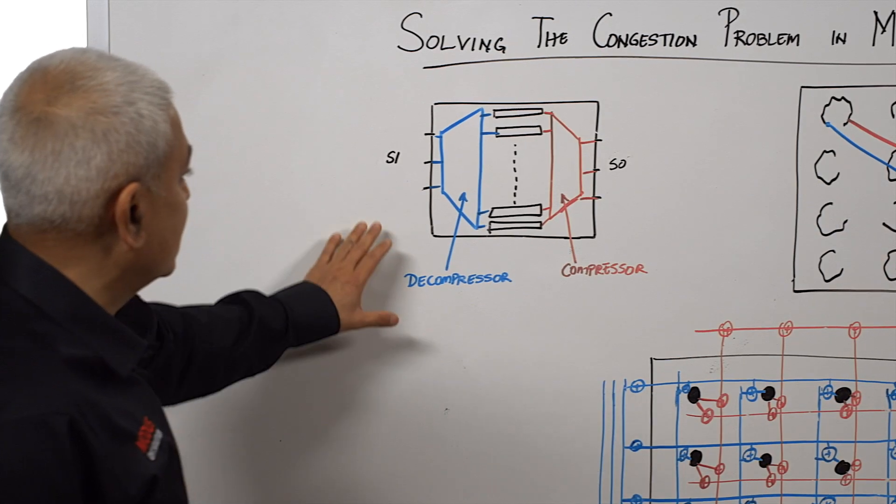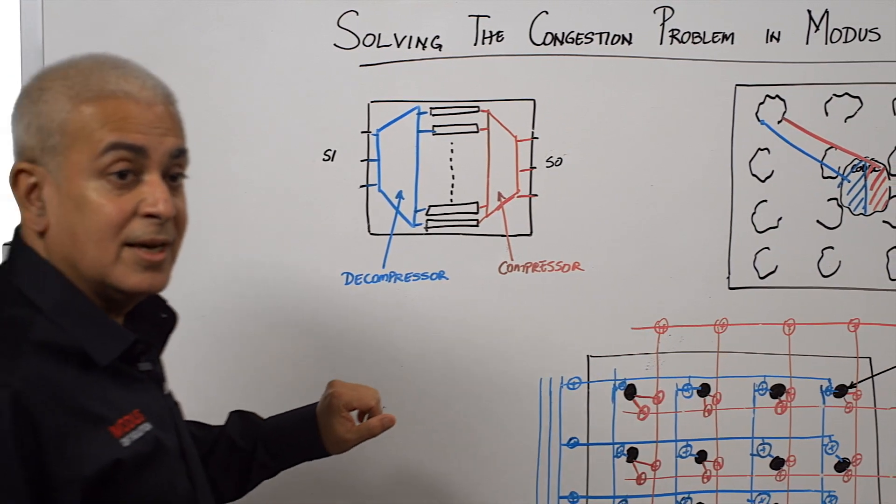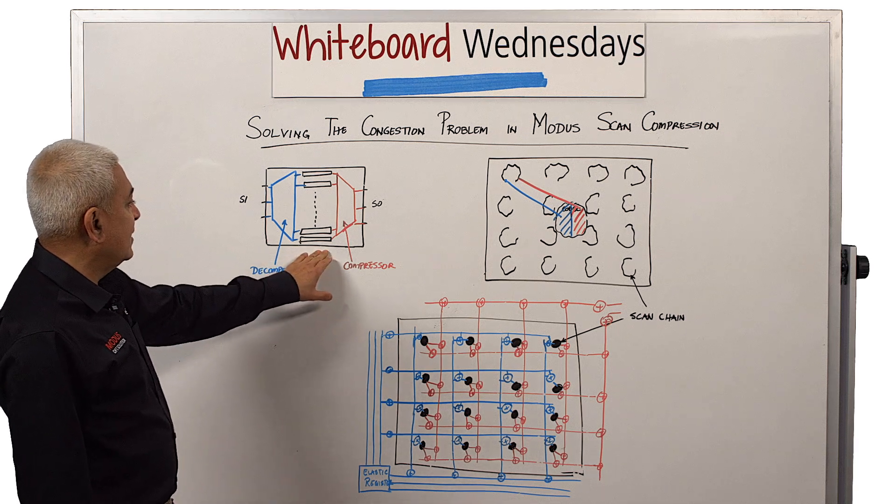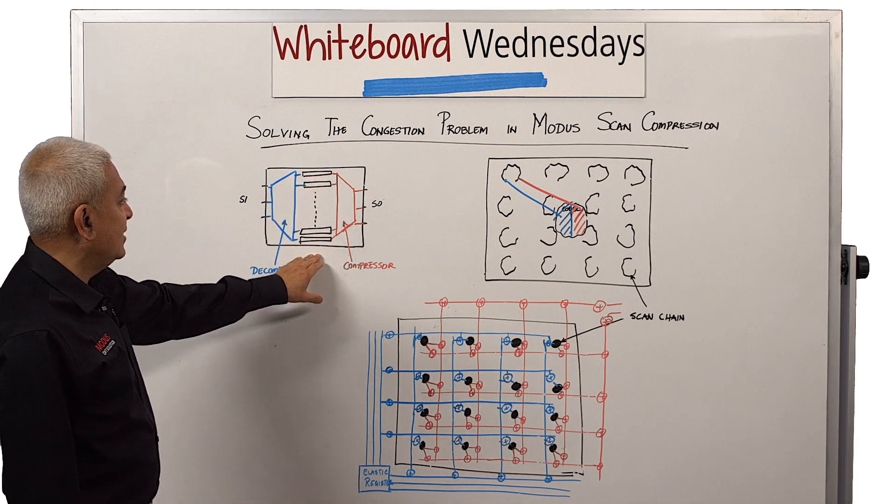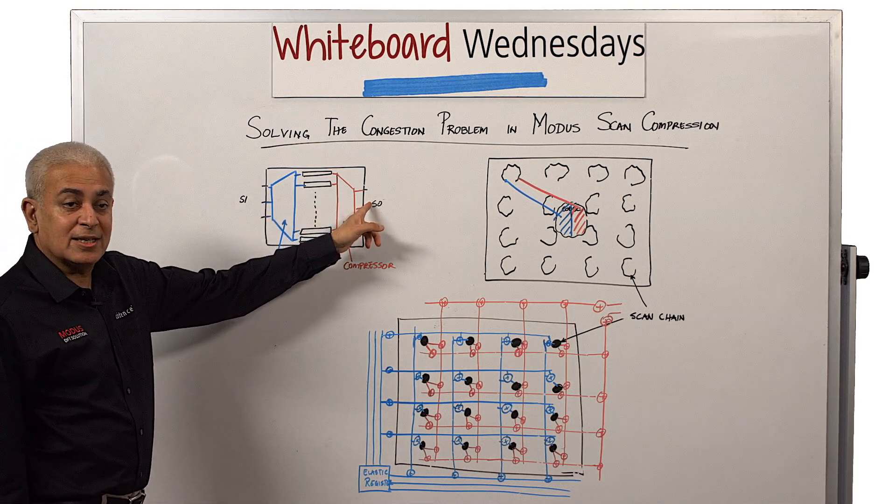What you see on the picture here is a representation of scan compression. It basically has many small scan chains that are fed from few scan ins and are connected to few scan outs.